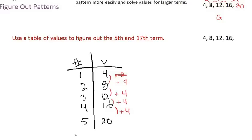But what about the 17th term? I don't want to keep adding 4 all the way down to 17, because again it could take too long and we could make a mistake. So I'm going to use this table to find the pattern across the columns — instead of going down, we're going to go across.